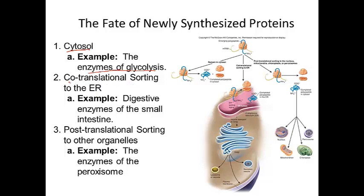We also have co-translational sorting — 'co' meaning 'during.' During the process of producing the protein, we actually shuttle it right to the ER, and from there the protein gets shipped to its destination. For example, the digestive enzymes of your small intestine are actually produced and ultimately secreted into the small intestine using co-translational sorting. Post-translational sorting means the protein is produced and then targeted to its destination — for example, proteins meant for the nucleus, mitochondrion, or other organelles.